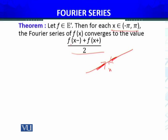If the function is discontinuous, then F(x⁻) and F(x⁺) are not necessarily the same. That's why the Fourier series will converge to their sum divided by 2, which is the average value.